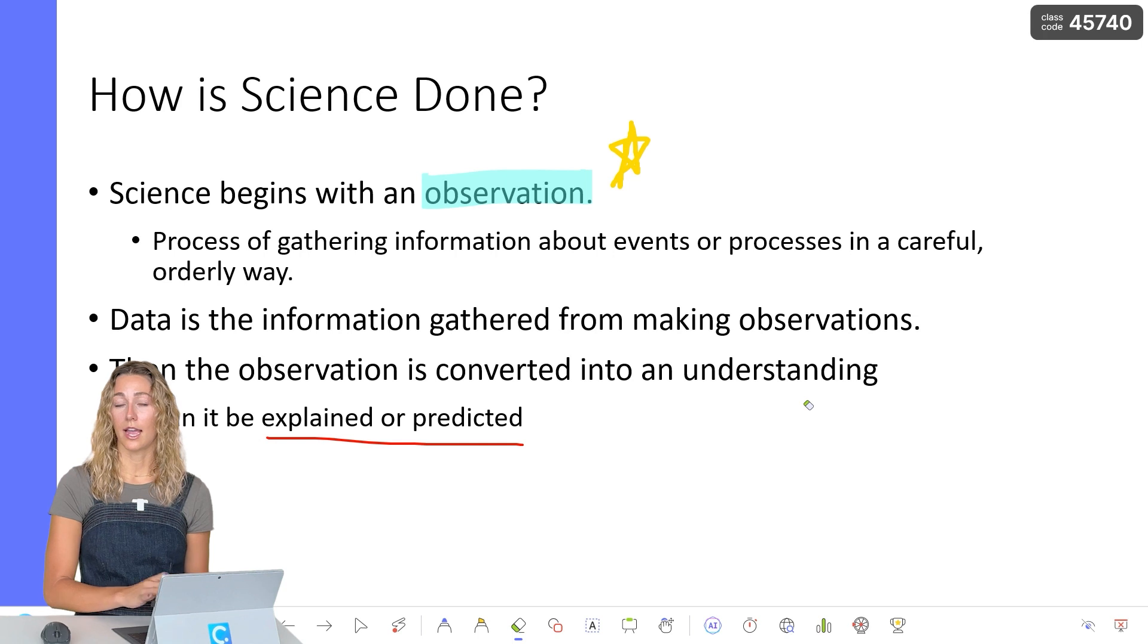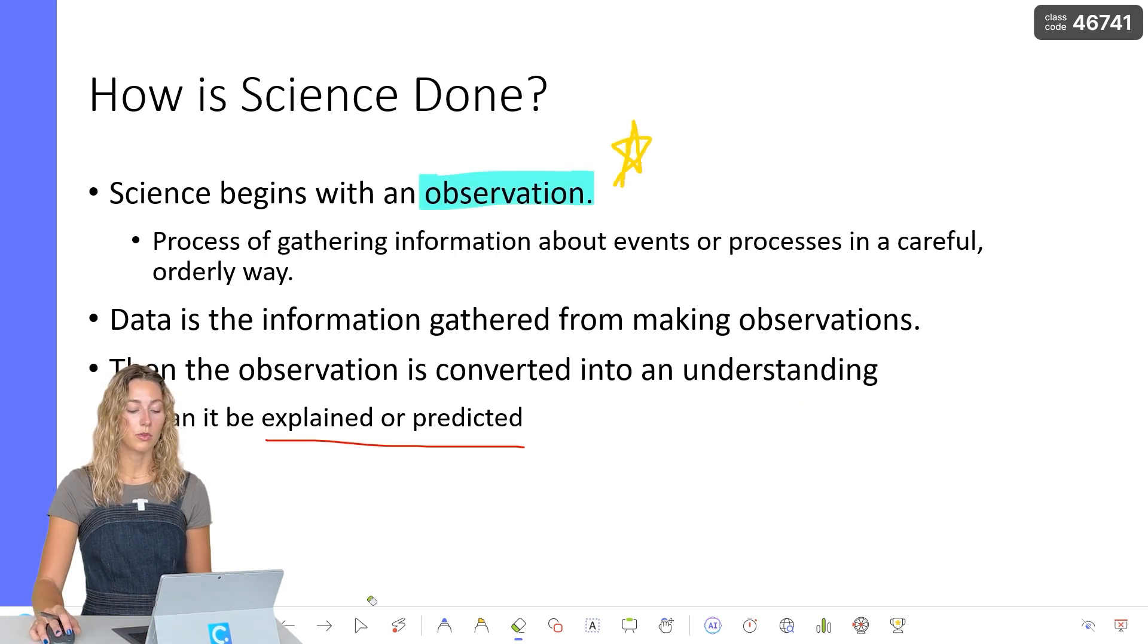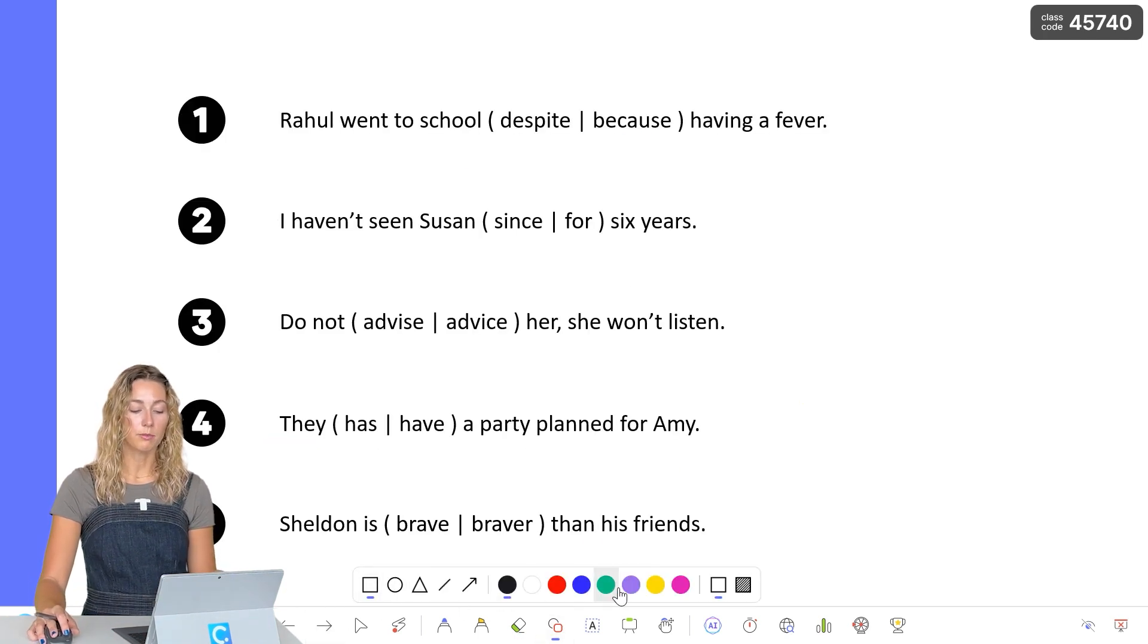Not only do we have the pens and the highlighters for annotating, but you can also use shapes. So there are a whole bunch of different shape options and different colors that you can use to add your shapes to your slide. You can also move your shapes around and resize as needed. In addition, you can also select a shape and make the shape filled in.